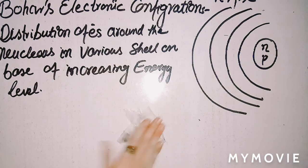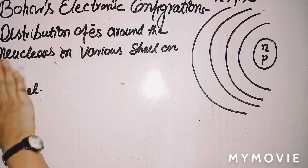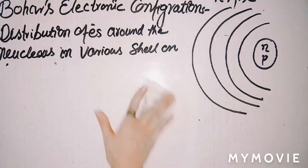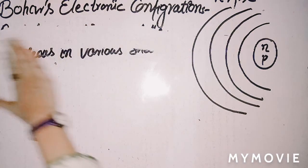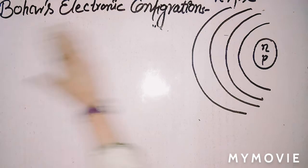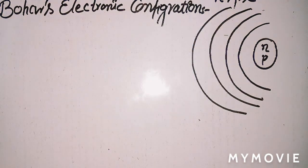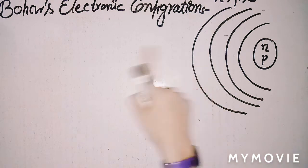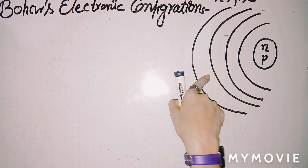In order to elaborate this definition, Bohr provided rules for the distribution of electrons. This set of rules used for the distribution of electrons in shells is known as Bohr's electronic configuration scheme.